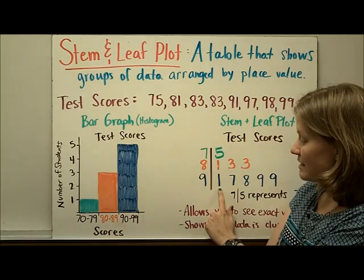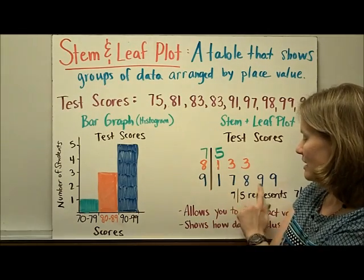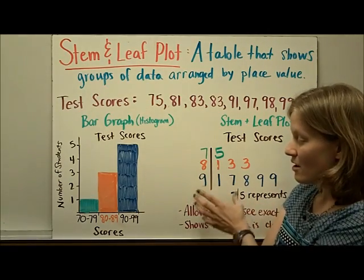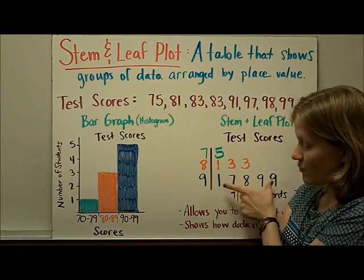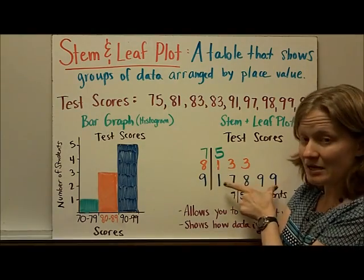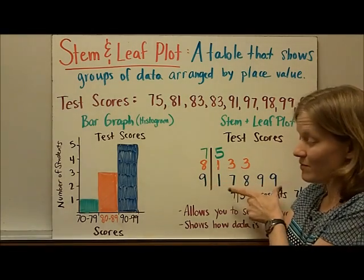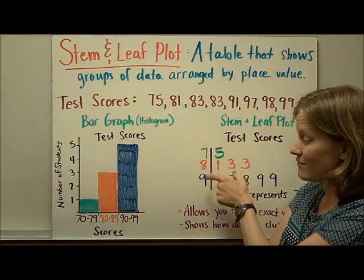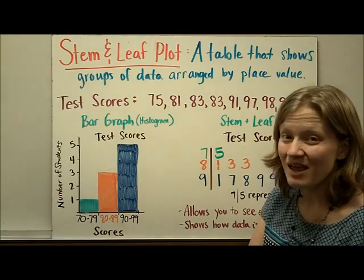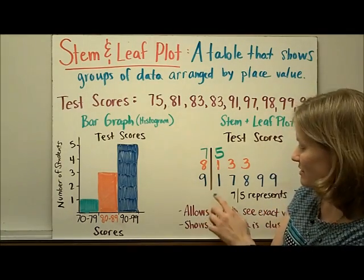And then we can see all the 90s: 91, 97, 98, 99. We can still see that because there are more leaves here in the 90s, we had more people score in the 90s than the 70s or the 80s. But we can see something more specific.